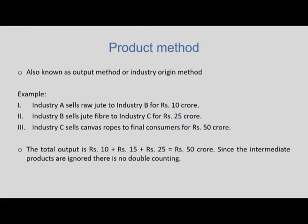Since B purchases raw jute from A for rupees 10 crore, it adds only rupees 15 crore, and industry C adds only rupees 25 crore over intermediate purchases of rupees 25 crore from B. Therefore, total output is rupees 10 crore plus rupees 15 crore plus rupees 25 crore, equaling rupees 50 crore. Since intermediate products are ignored, there is no double counting — which is extremely important in national income accounts. If the final output of all three industries were simply added without this approach, double counting would boost national product to rupees 85 crore.